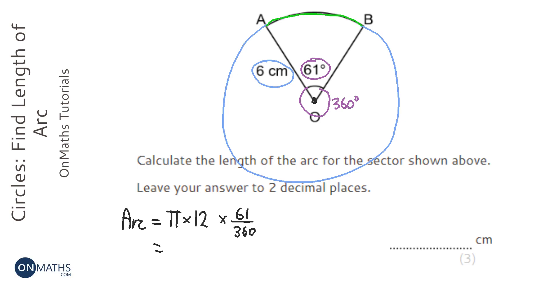So I'm going to get my calculator and type that in. Pi times 12 times, and I'm going to click the fraction button, 61 over 360 equals. And it gives me the answer of 6.38790. So to two decimal places, that's going to be 6.39 centimeters.